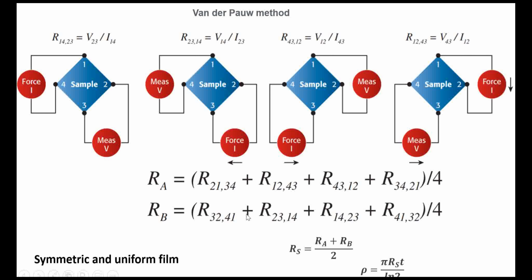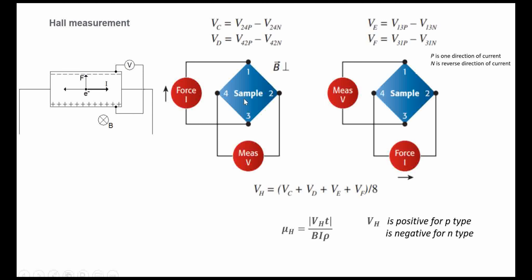For Hall measurement, voltage is measured between contacts 4 and 2, while current is forced between contacts 1 and 3, in the presence of a magnetic field. The direction of the magnetic field and current are known; we measure the polarity of the resulting voltage. Using the right-hand rule, we determine whether the carrier is a hole or electron — telling us whether the sample is p-type or n-type.